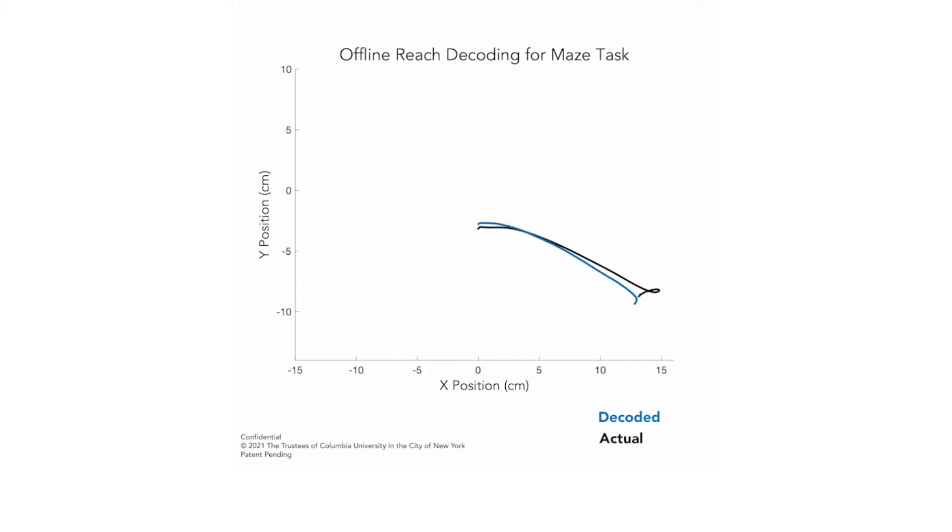As you can see, the decode is quite accurate and very rapid. We're able to keep pace with the rapid pace of the animal and generally come very close to decoding what he was actually intending to do.